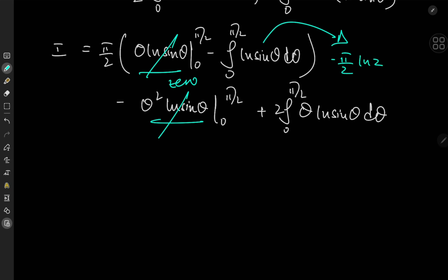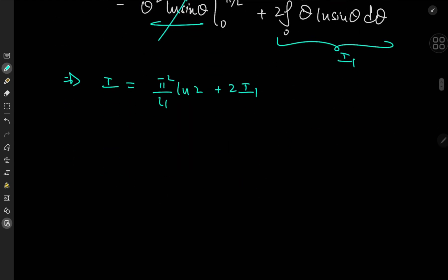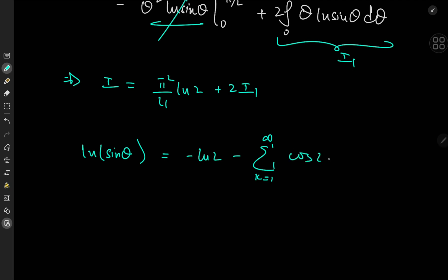The two negative signs cancel out with the π/2 outside, implying that the contribution from the first integral gives π²/4 · log 2. We're left with twice the integral I₁ = ∫₀^{π/2} θ²·cot(θ) dθ, which is our next target.